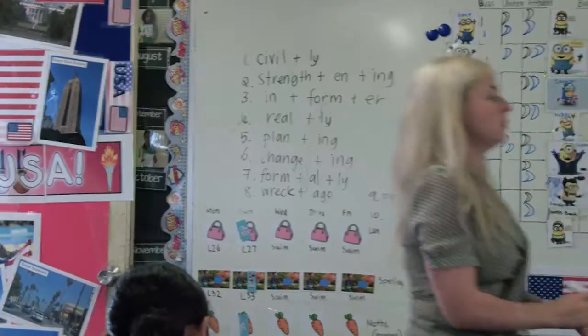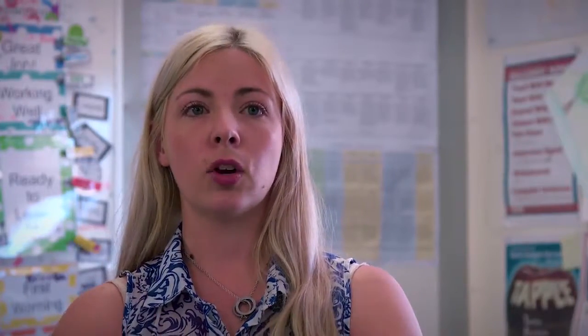So we use an explicit instruction mode, so direct instruction EDI. So I do it, we do it, then you do it. If I do it, the kids get to see it; we do it together, I'm still modelling it. Now go off and do it on your own — so we know that the kids have got it.